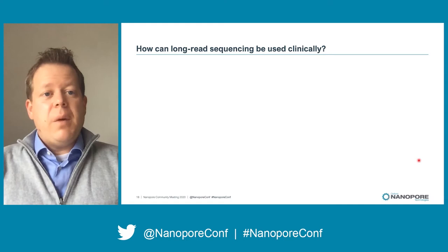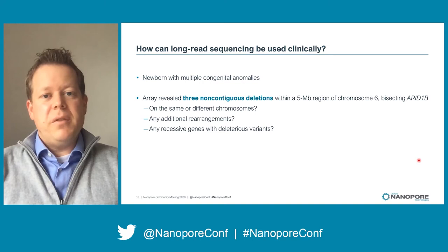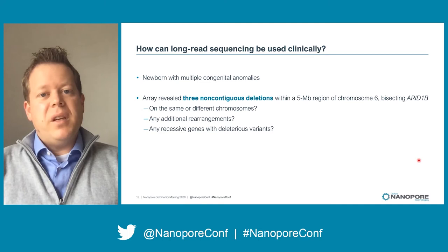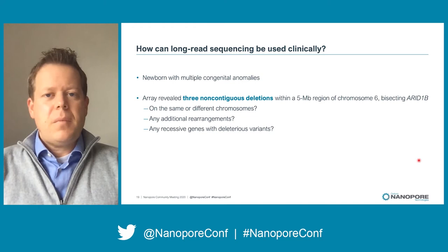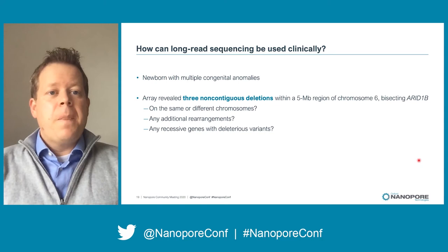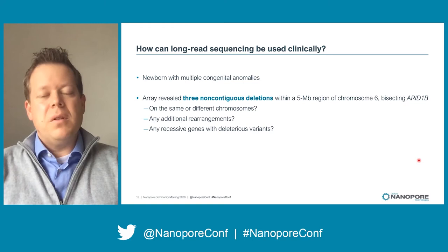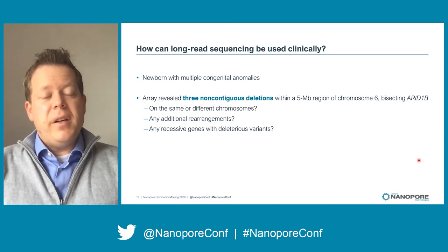So we knew ReadIntel would work, and we wanted to ask our first question: can we use it to resolve complex structural changes identified on clinical testing? The example I'll show is from a patient where an array identified three non-contiguous deletions within a five megabase region of chromosome 6. This was felt to be diagnostic, as one of the bisected genes was ARID1B and variants in that gene are associated with Coffin-Siris syndrome, which fit this case very well. That said, several outstanding questions remained that the array couldn't answer: Were all the deletions on one chromosome or different chromosomes? Was there a deletion and duplication? Were there rearrangements underneath associated with the deletions? And did the deletions uncover any pathogenic variants in genes associated with recessive disorders?